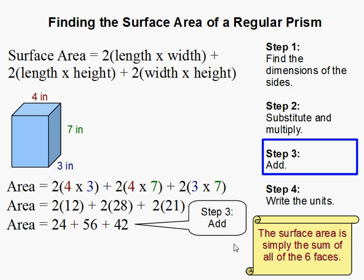Then we need to add those up. 24 plus 56 plus 42. And that gives me 122.